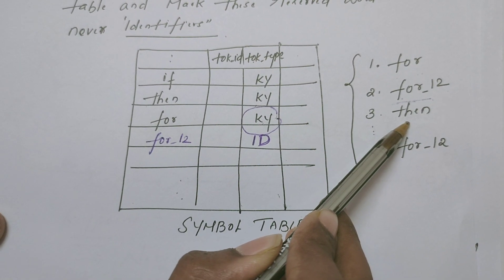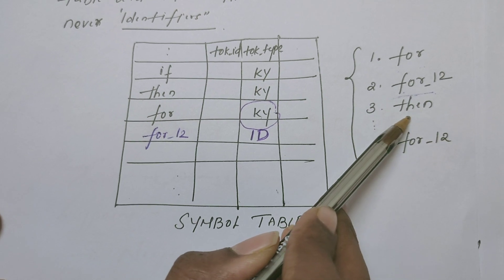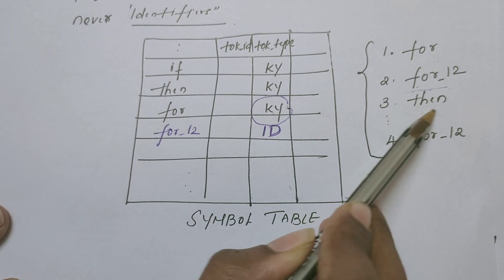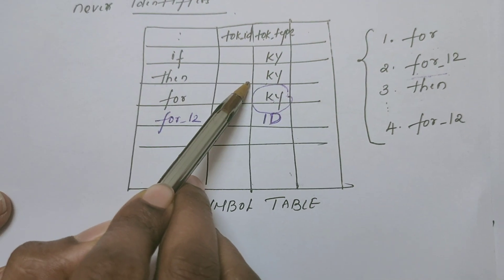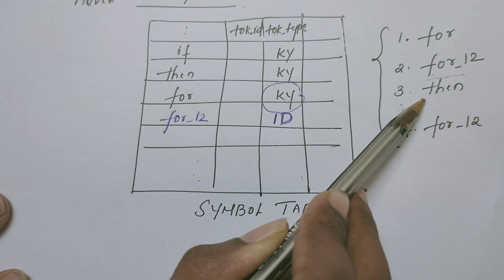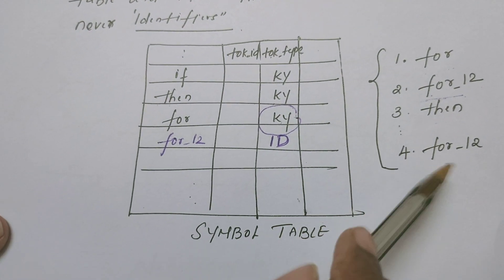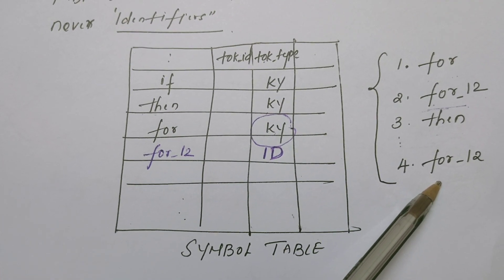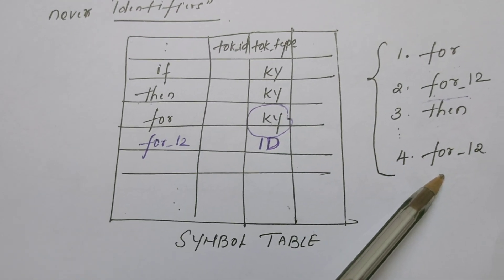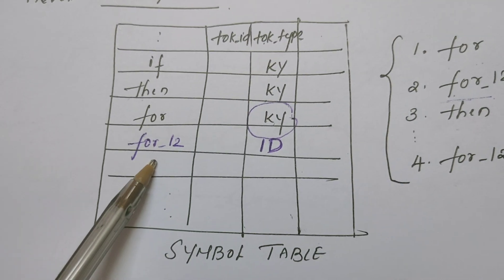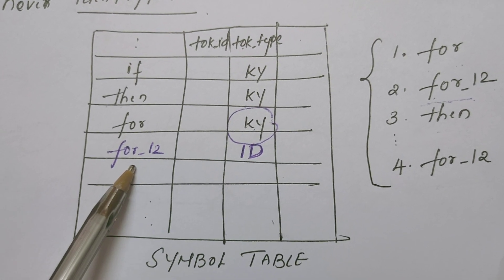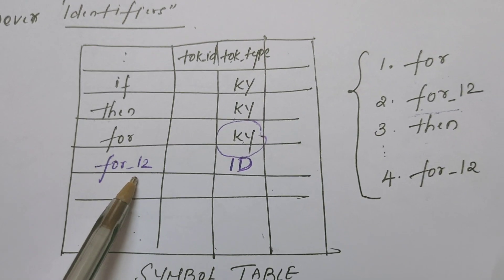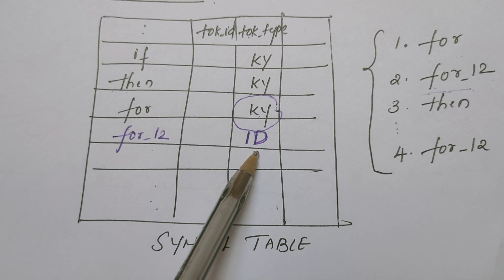Now let us consider THEN. THEN is also recognized by the transition diagram, and THEN is a keyword already installed in the symbol table. So its token type is keyword. Later, if FOR_12 is encountered again by the lexical analyzer, it tries to install it — it is already there with token type ID, so it returns the token type as ID.